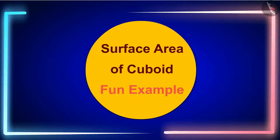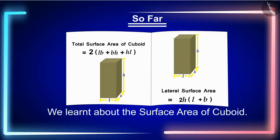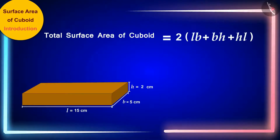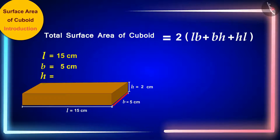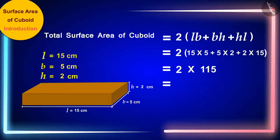Hello friends, welcome to this video. In the previous video, we learnt about the surface area of cuboid. Friends, did you find a solution to the question asked in the previous video? This is the formula for the total surface area of a cuboid where L, B and H are the length, width and height of the cuboid. Here we will write the length of the box 15 cm, the width 5 cm and the height 2 cm respectively in place of L, B and H. In this way, we get the total surface area of the cuboid as 230 cm².